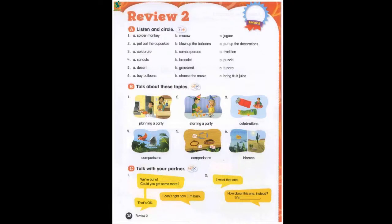Review: The spider monkey is more energetic than the sloth. Who will put up the decorations? She will. What will people in Brazil do in the summer? They'll celebrate Carnival. Which bracelet is the cheapest? This bracelet. Which biome is the coldest? The tundra. We'll buy balloons for the party.